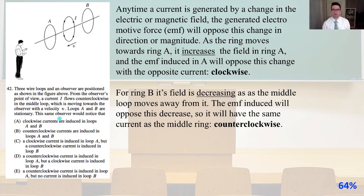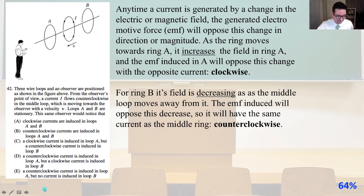Any time a current is generated by a change in the electric or magnetic field, the generated electromotive force (EMF) will oppose this change in direction or magnitude. As the ring moves towards ring A, it increases the field in ring A, and the EMF induced in A will oppose this change with the opposite current — counterclockwise. For ring B, its field is decreasing as the middle loop moves away from it. The EMF induced will oppose this decrease, so it will have the same current as the middle ring, i.e., counterclockwise. That is answer C.